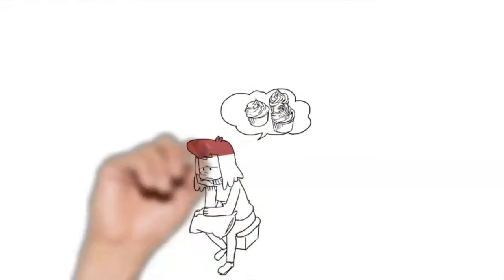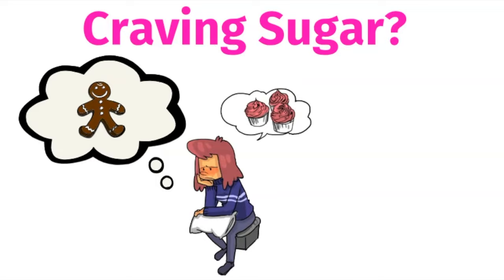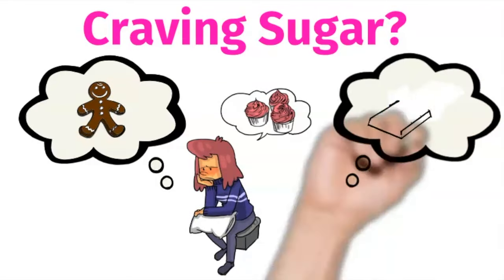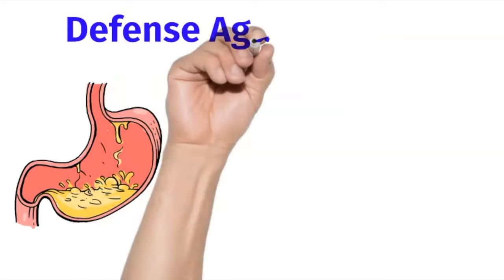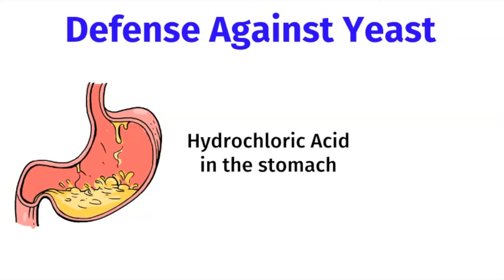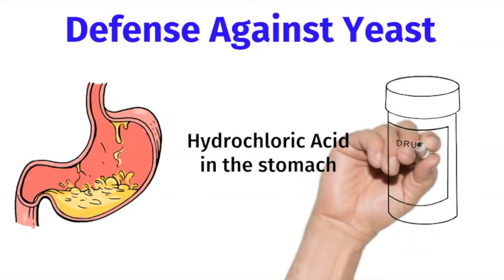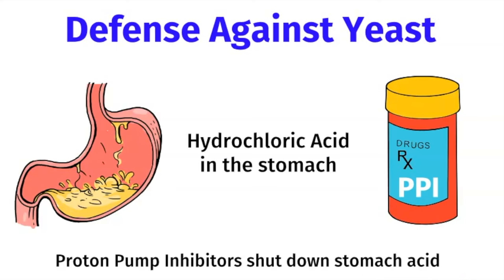Do you have a sweet tooth that's out of control? Believe it or not, yeast overgrowth in your microbiome can actually hijack your cravings — they're desperate to survive, so they want you to eat more sugar. One of our biggest defense mechanisms against yeast overgrowth is the hydrochloric acid in our stomach. The problem is a lot of people are on acid suppressive medications called proton pump inhibitors like omeprazole. These medications shut down the production of stomach acid and can tip the balance of your microbiome in favor of yeast overgrowth.